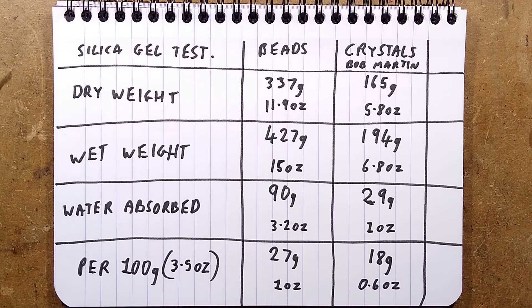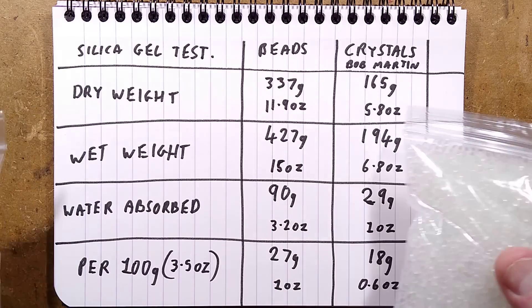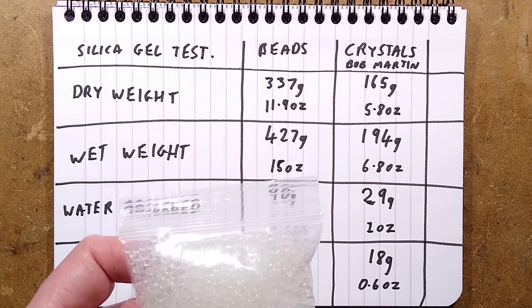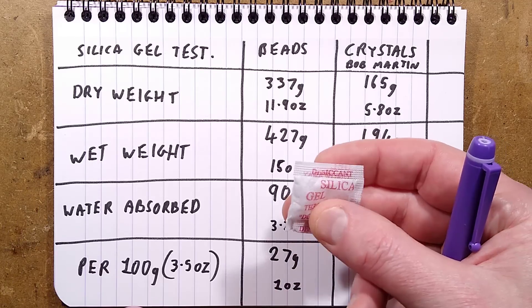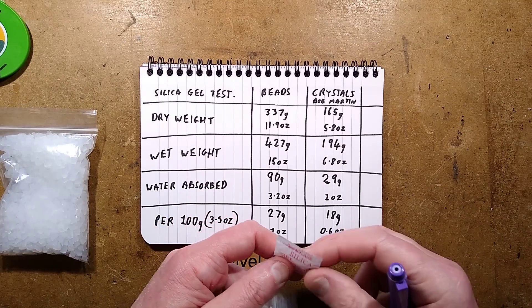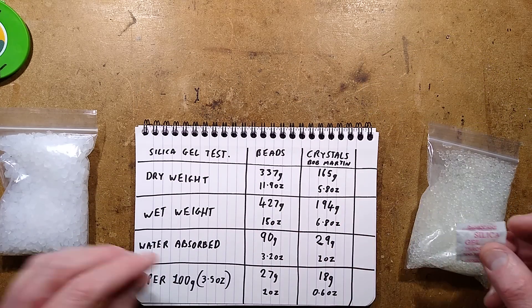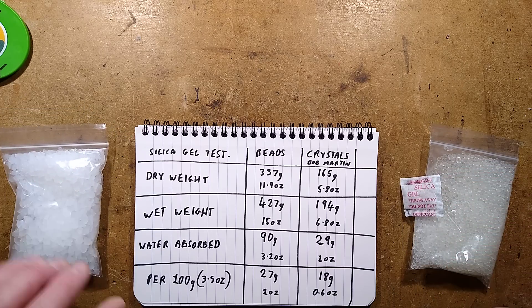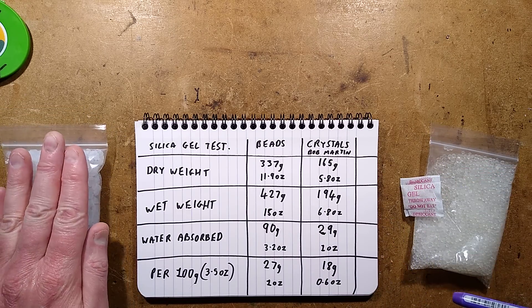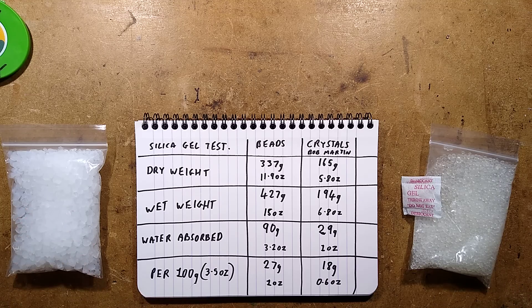So it's about half as effective and much bulkier, so I'm guessing that's probably why the retail packages, when you get something with the little silica gel packages in it, I'm guessing that's ultimately why they tend to just use the round bead silica gel, as opposed to crystals like this. But it was well worth doing, and the short answer is, it's bulkier and it absorbs less water, but it does actually work, just not as well.